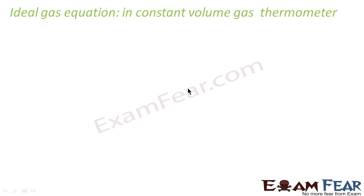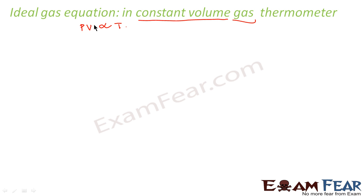In a constant volume gas thermometer, gas is used inside the tube and the volume is kept constant. From the ideal gas equation, PV is proportional to T. If volume is constant, then the only factor that can affect temperature is pressure.